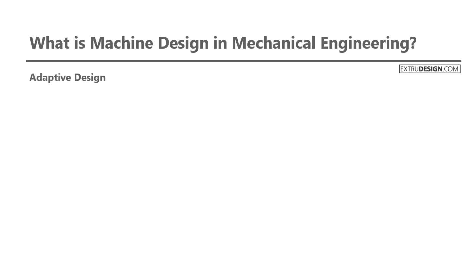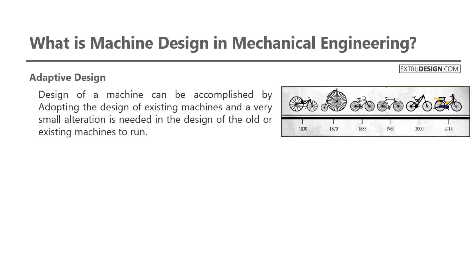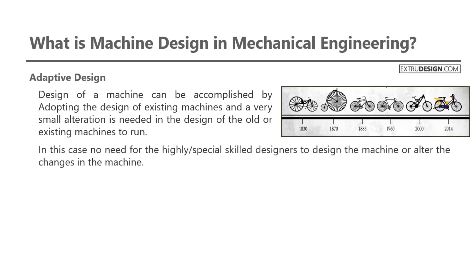First one is the adaptive design. Design of a machine can be accomplished by adopting the design of existing machines, and a very small alteration is needed in the design of the old or existing machines to run. In this case, no need for high or special skilled designers to design the machine or alter the changes in the machine. A good example will be the design evolution of the bicycle.